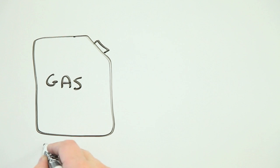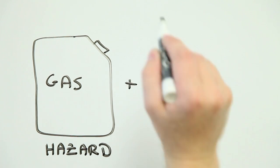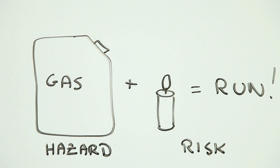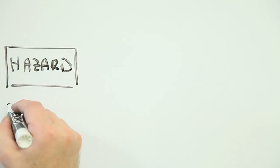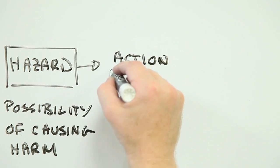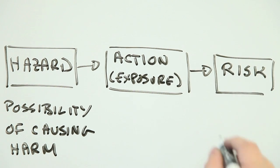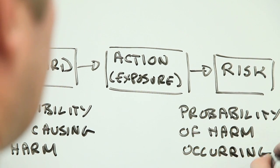A container of gasoline is a hazard. Pouring it while holding a candle is a risk. Of course, there's more to it than this, but the bottom line is that there's always something else that's needed to change a hazard into a risk.